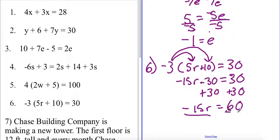So once I do that I'll have negative 15r equaling 60 and then this is the point where I can divide my coefficient from my constant. So I'll divide negative 15r by negative 15, I'll do the same with 60, I'll get that r is equal to negative 4.